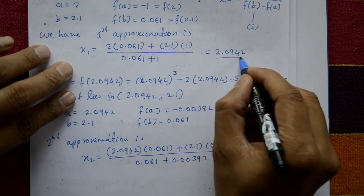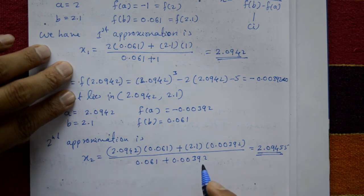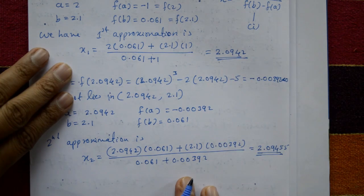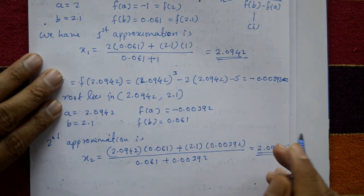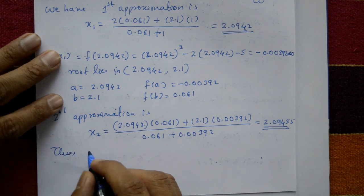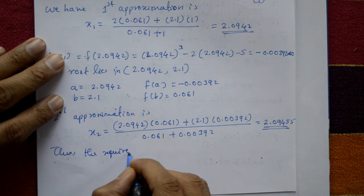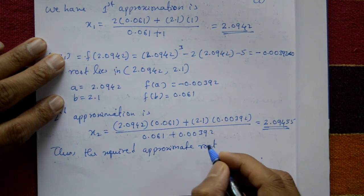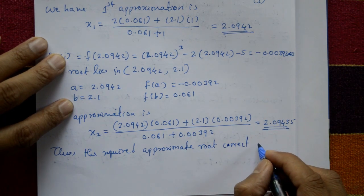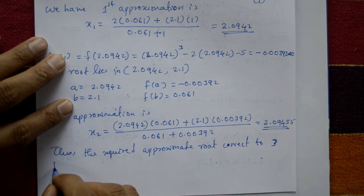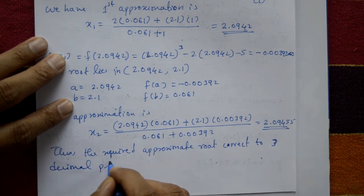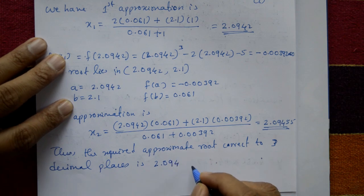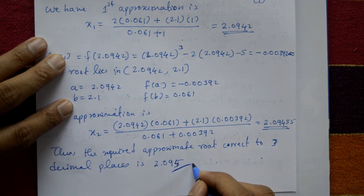Comparing x1 and x2: both are equal to 2.094 correct to three decimal places. Since the two consecutive approximations agree to three decimal places, the required root is 2.094.